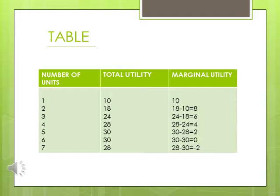When the sixth unit is consumed, total utility reaches its maximum. Within the table, 30 is the highest number, and the sixth unit represents the saturation point — where we reach the utmost utility of 30, and marginal utility at this point is 0. The saturation point is where marginal utility is 0 and total utility is at its peak.